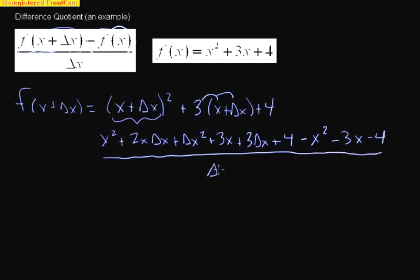Now if you do this right, the original function that you subtracted over here should cancel itself out. So we have a positive x squared and a negative x squared, 3x and a negative 3x, 4 and a negative 4.